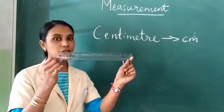To measure the length of your classroom, which unit do you have to use? You use metre. To measure the longer object, we use the unit metre. And you know, 100 centimetres make 1 metre. 100 centimetres make 1 metre.